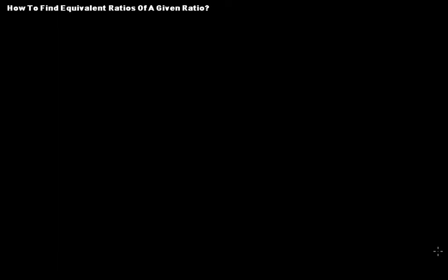Let's learn how to find equivalent ratios of a given ratio. Let's take a very basic ratio — say 1 ratio 2. If we represent it in this form, that is 1:2, we say 'one ratio two.' And if we write it in the form of comparison by division, then we say 1 over 2.